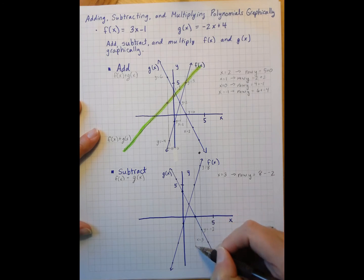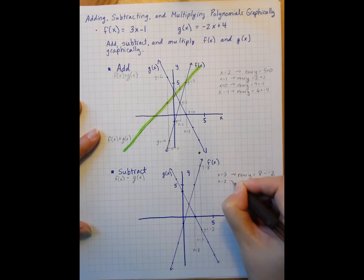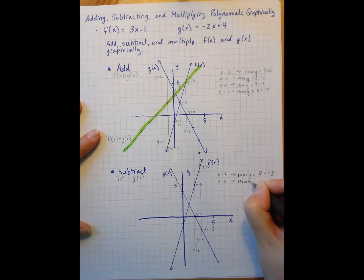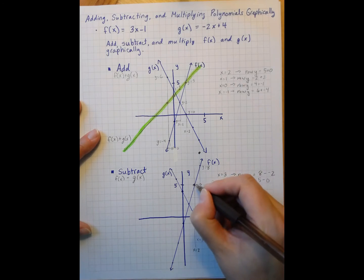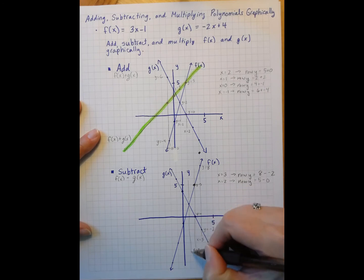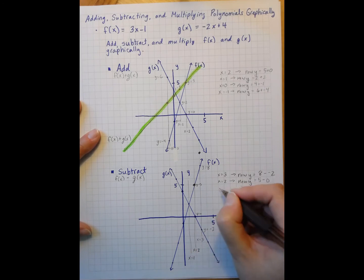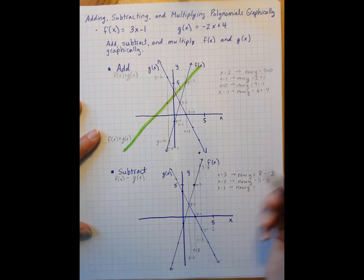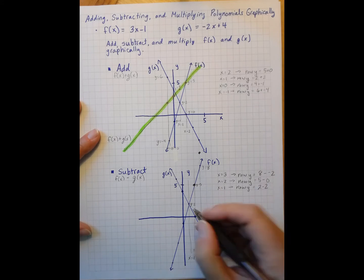Let's look for when x is 2. When x equals 2, I have a y value of 0 and a y value of 5. So my new y is going to be my f of x y minus my g of x y, so that's 5. When I look at x equals 1, my new y, well, in this case, my y's are 2 for both of them, so it's going to be 2 minus 2, so that's 0.